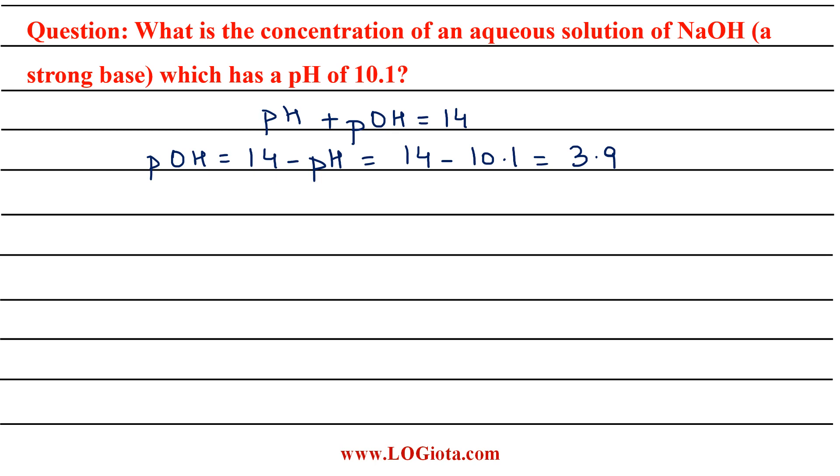Now there is another equation which is pOH equals minus log of the concentration of OH negative. This equation can also be written as OH negative concentration equals 10 raised to power minus pOH.